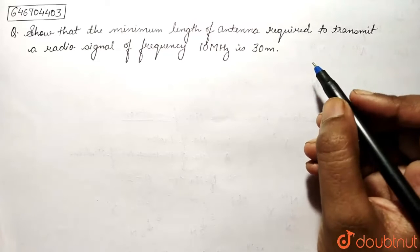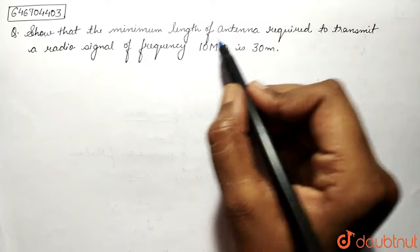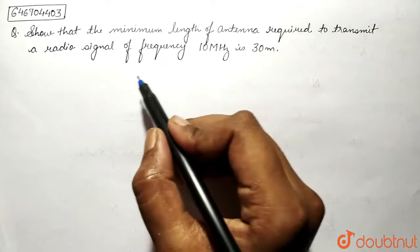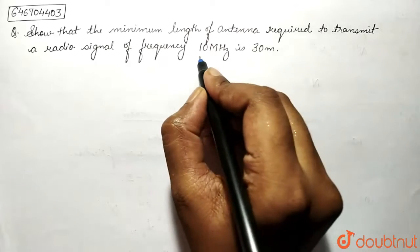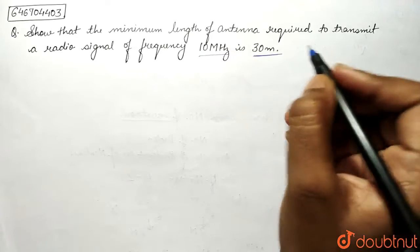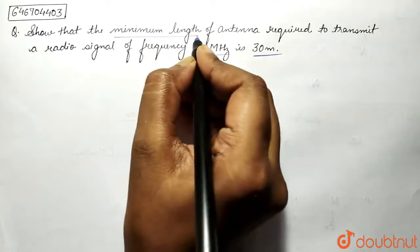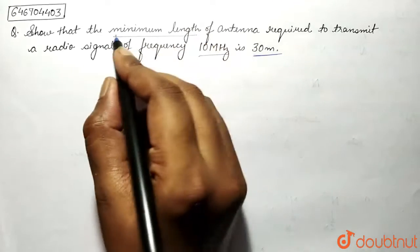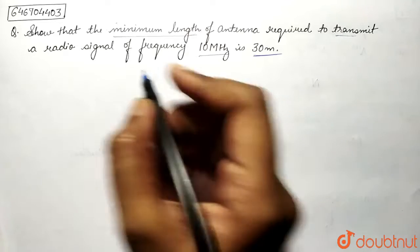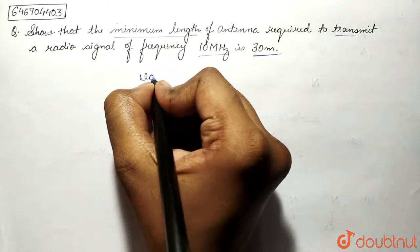The question asks to show that the minimum length of antenna required to transmit a radio signal of frequency 10 megahertz is 30 meters. Now what do you mean by minimum length? The minimum length the signal can transmit will be its wavelength.